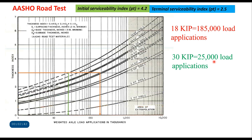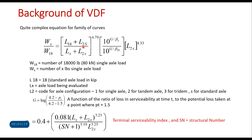An 18 kilo-pound axle load will fail the pavement in 185,000 applications, while a 30 kilo-pound axle load can fail the pavement in just 25,000 load applications. There were several such families of curves developed for different thickness indices, different axle loads, and axle load configurations, and the basic equation was derived from these.